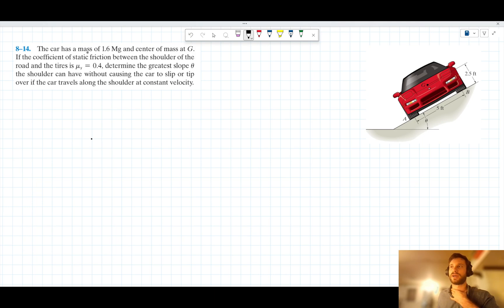It's saying the car has a mass of 1.6 megagrams and a centre of mass at G. If the coefficient of static friction between the shoulder of the road and the tyres is 0.4, determine the greatest slope theta the shoulder can have without causing the car to slip or tip over if the car travels along the shoulder at constant velocity.